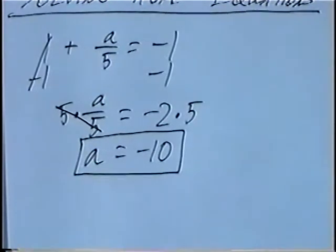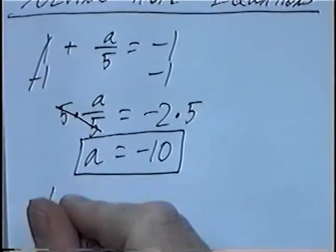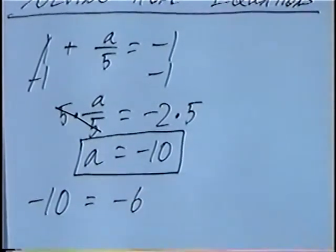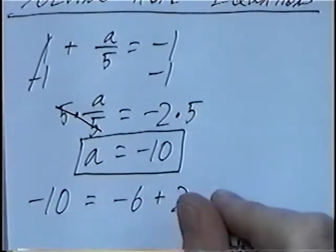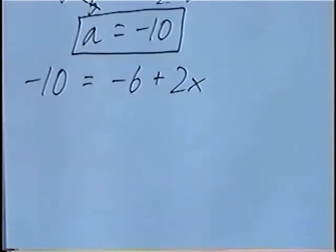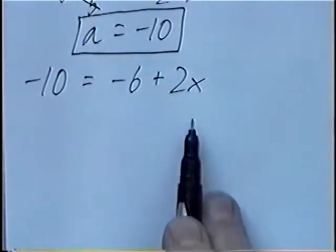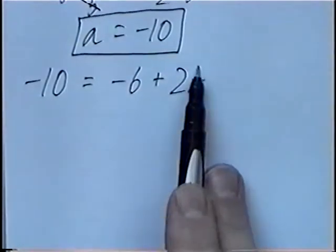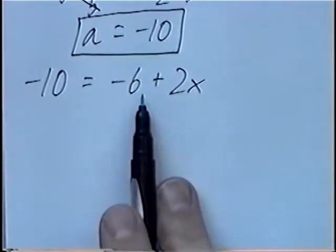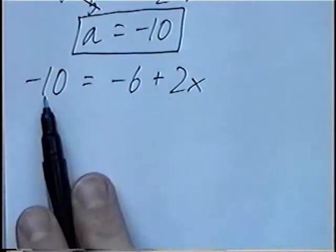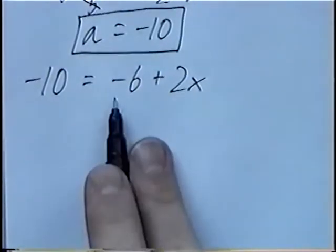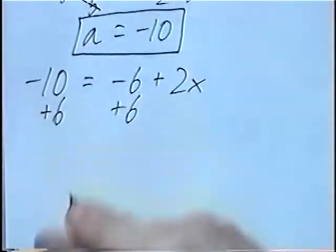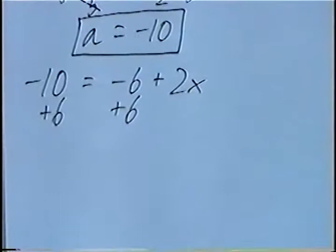Second question, and last question for the section, negative 10 equals negative 6 plus 2x. This time the variable x is on the right hand side, but again these same steps, we want to get x by itself, so we want to move the negative 6 to the other side. The opposite of negative 6 or minus 6 would be adding 6, and again we'll do that on both sides of the equation.